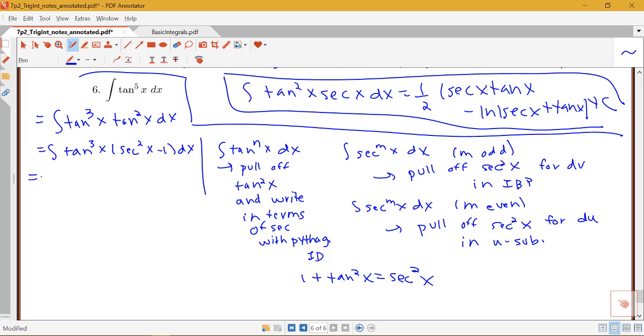So I have tan cubed x times secant squared x minus 1 dx. And then I can distribute that through. So I have tan cubed x secant squared x dx minus an integral of tangent cubed x dx. Notice that I've made one of these integrals a little bit simpler.